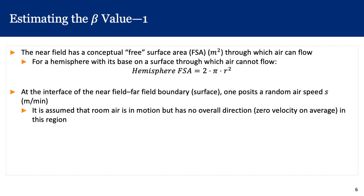How do we estimate the value of beta? We can do it in a couple of ways, but the easiest way is to think of the free surface area of this imaginary hemisphere surrounding the source. The free surface area, denoted by FSA, has units of area — meters squared. Air moves out of the room into this imaginary hemisphere, and then from the hemisphere back out into the rest of the room. For a hemisphere with a base on a surface, the surface area is given by 2 times pi times the radius squared.